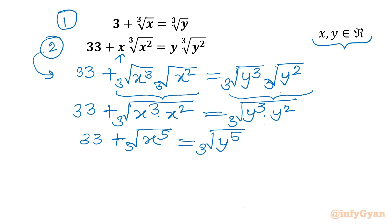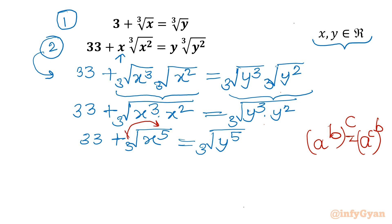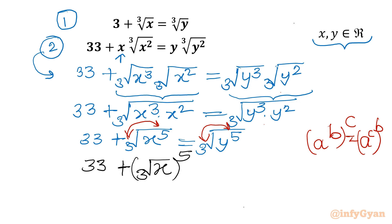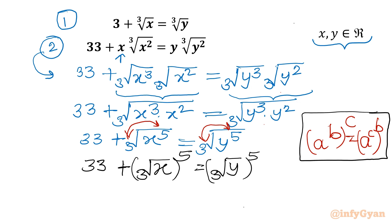Using the exponent law which states that a^b whole power c equals a^c whole power b, I will swap the powers. So I write 33 plus cube root of x, whole power 5, equals cube root of y, whole power 5. This is our equation number 2.